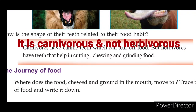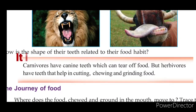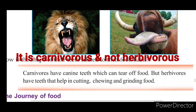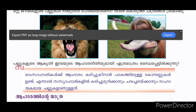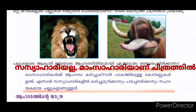Carnivores have canine teeth which can tear off food. These are the teeth that help with cutting, chewing and grinding food — that is the herbivore. In the second picture, the teeth help with cutting, chewing and grinding food.